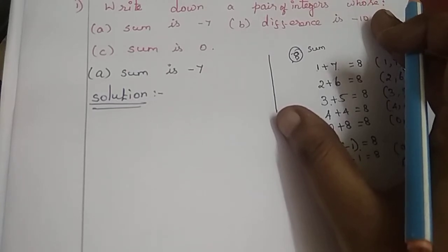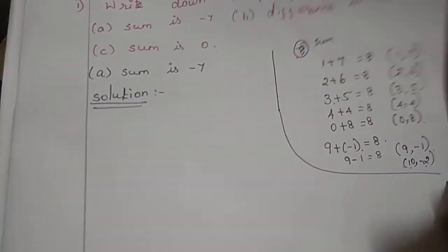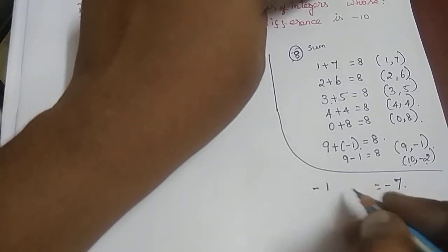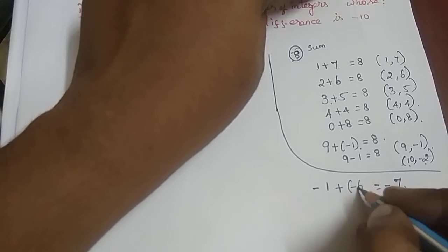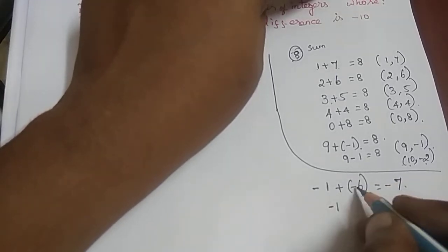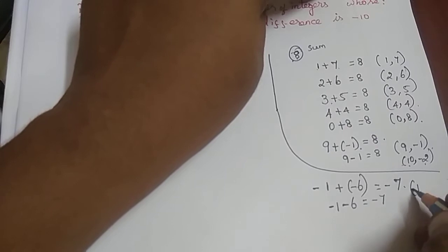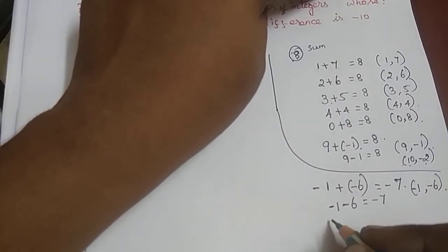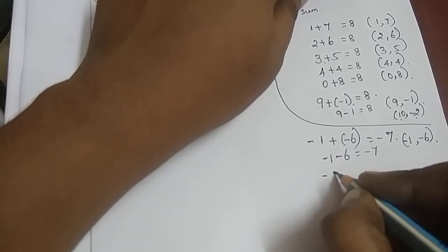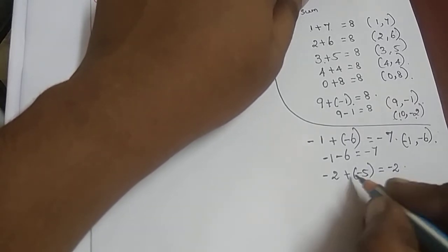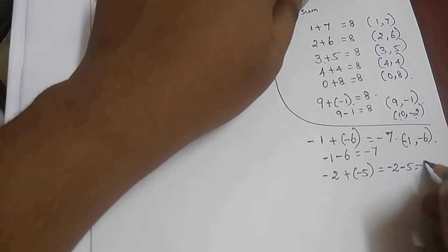Now for the actual answer — we need pairs that give minus 7. What are the possibilities? Minus 1 plus minus 6: minus 1 plus minus 6 equals minus 7. So the first pair is minus 1, minus 6. Next pair: minus 2 plus minus 5 — that is also minus 7.